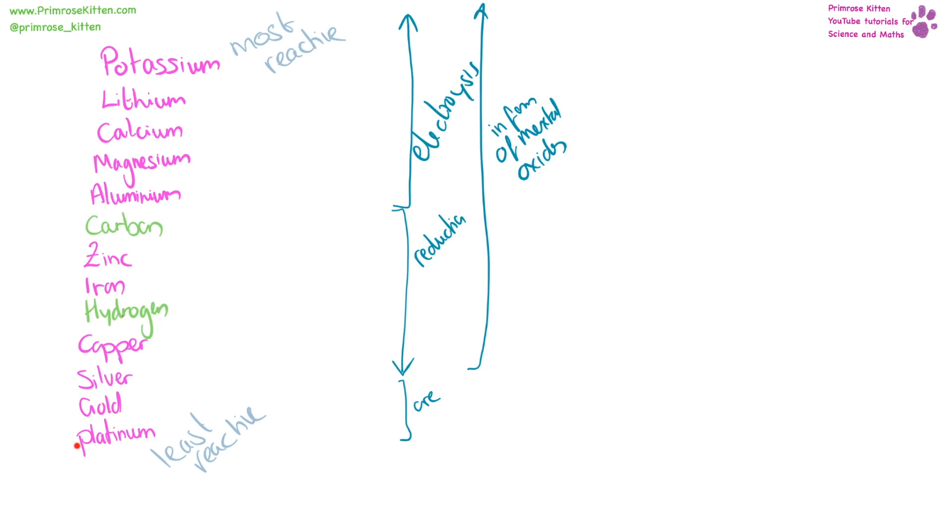And we can use this to predict the products for displacement reactions. If we reacted magnesium chloride with calcium, because calcium is more reactive than the magnesium, the calcium is going to take the place. So we are going to get calcium chloride plus magnesium as our products. However, if we reacted magnesium chloride with aluminium, because magnesium is more reactive, aluminium cannot take the place, it will not displace it, so no reaction is going to take place.